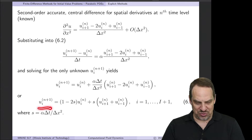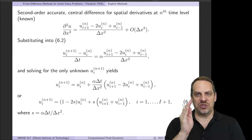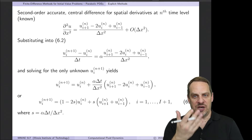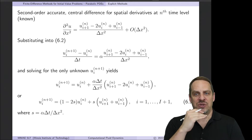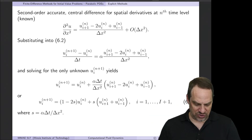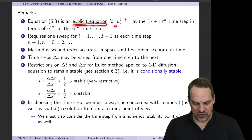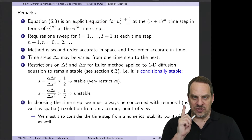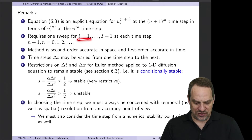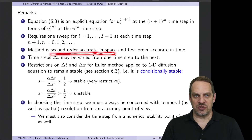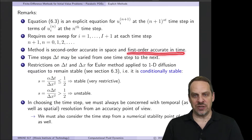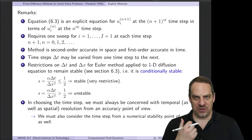This is an explicit equation for u_i^(n+1) — the only unknown. It requires us to sweep along all values of i for each time step. The method is second-order accurate in space (using a second-order central difference for ∂²u/∂x²) but only first-order accurate in time, which is why we call it the first-order explicit method. One benefit is that you can easily adjust Δt as you go.